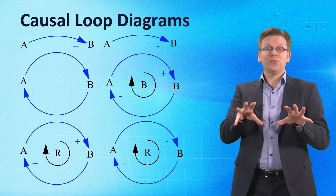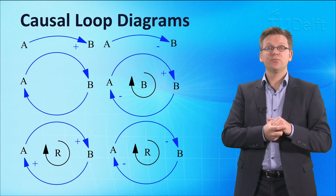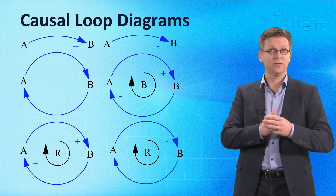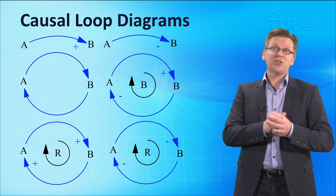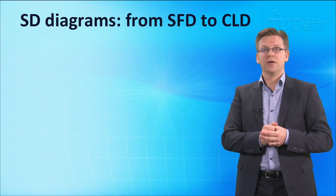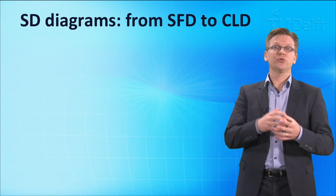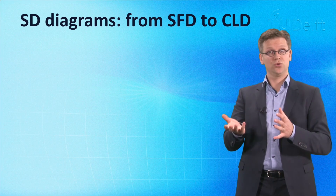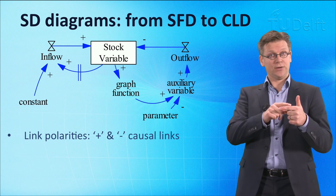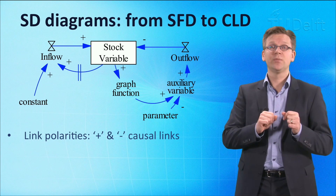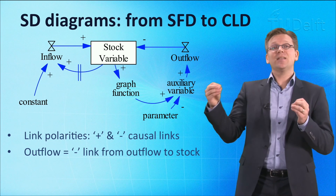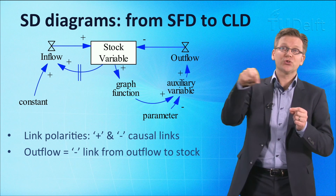When dealing with feedback loop systems consisting of multiple loops, it is hard to derive the behavior of the system without simulation. So let's gradually transform the previous stock-flow diagram into a causal loop diagram. The first step would be to turn the flows into causal links. An inflow into a stock is actually a positive causal link from the flow variable to the stock variable, but an outflow out of a stock is actually a negative causal link from the outflow variable to the stock variable.